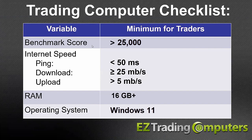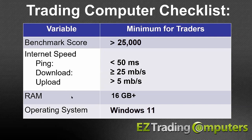Here's a checklist: you need your benchmark score to be 25,000 or higher — anything under that risks slippage and will cost you money. For internet speed, you want ping below 50 milliseconds, download speed greater than 25 megabits per second — get a gig if you can — and upload speed a minimum of 5 megabits per second.